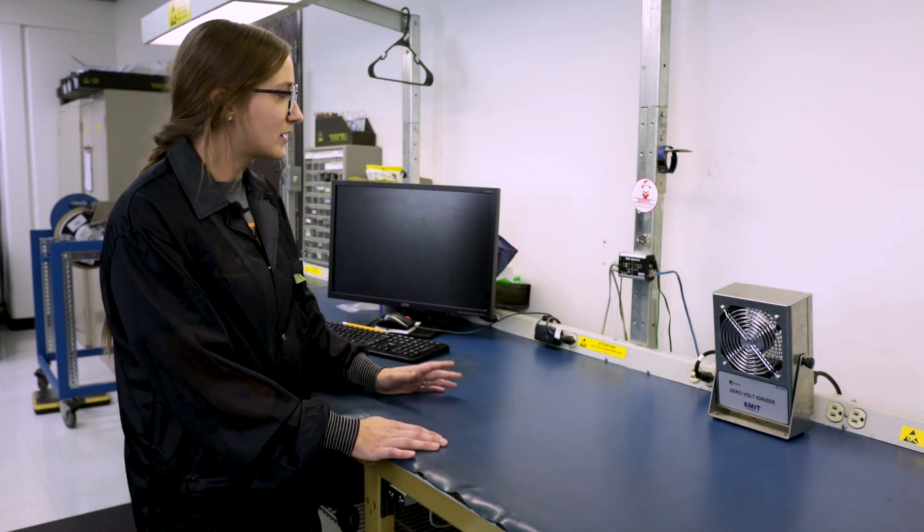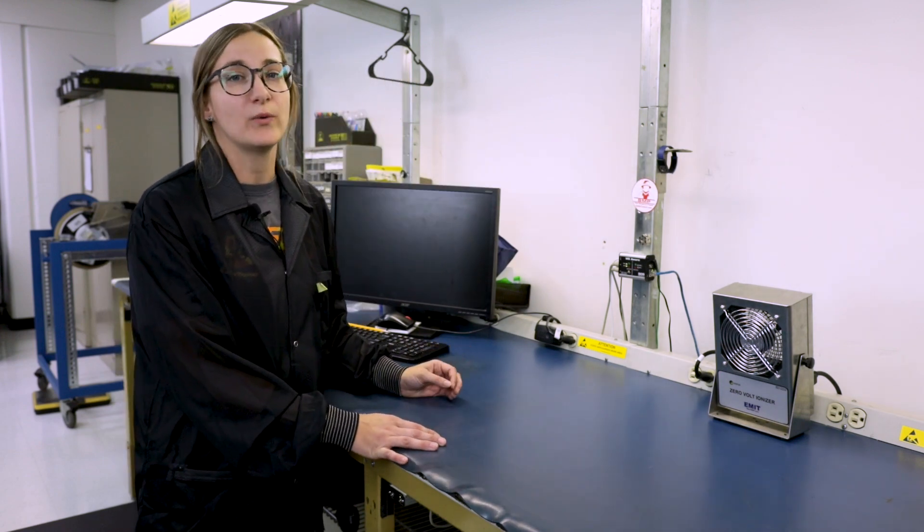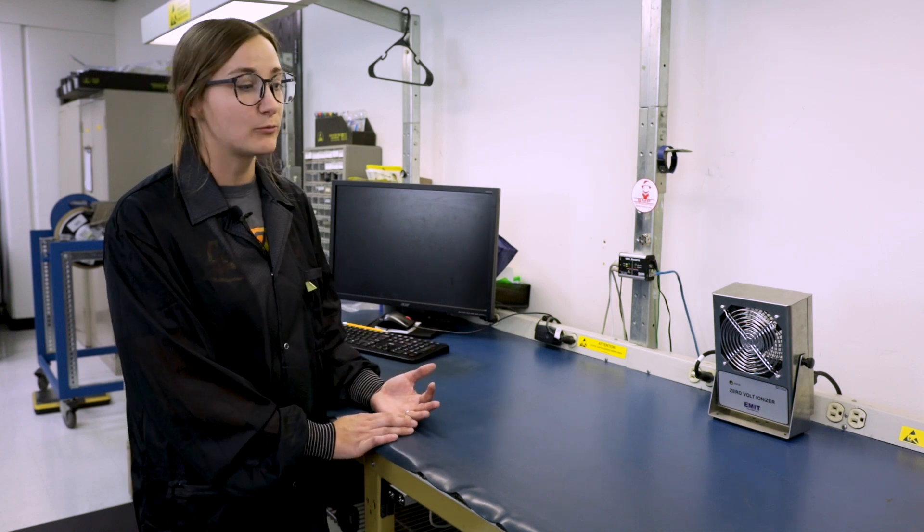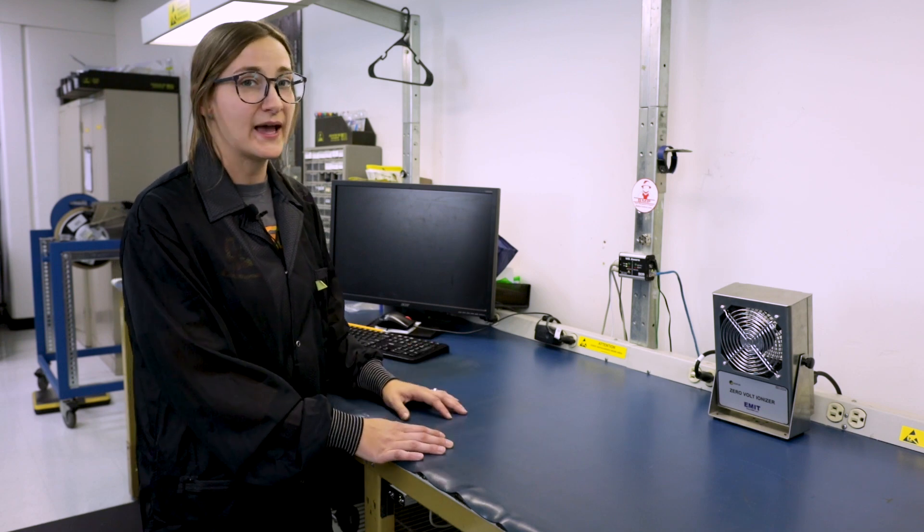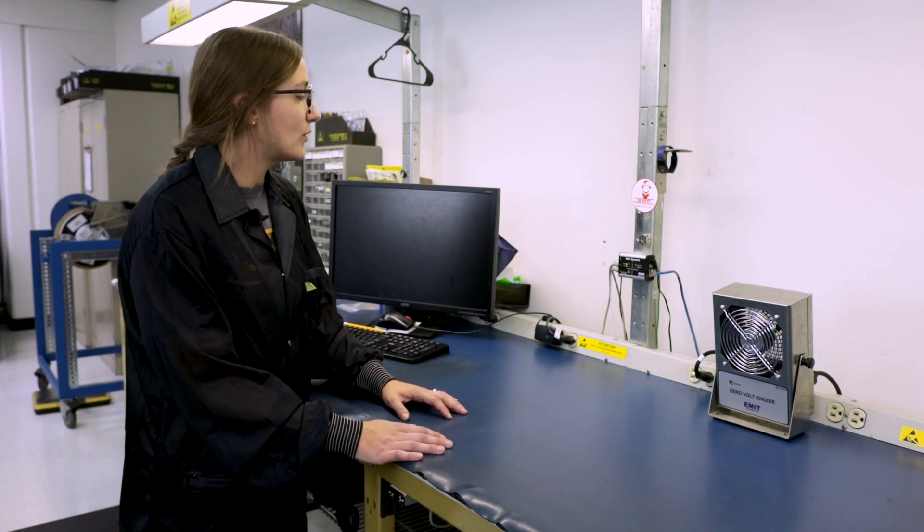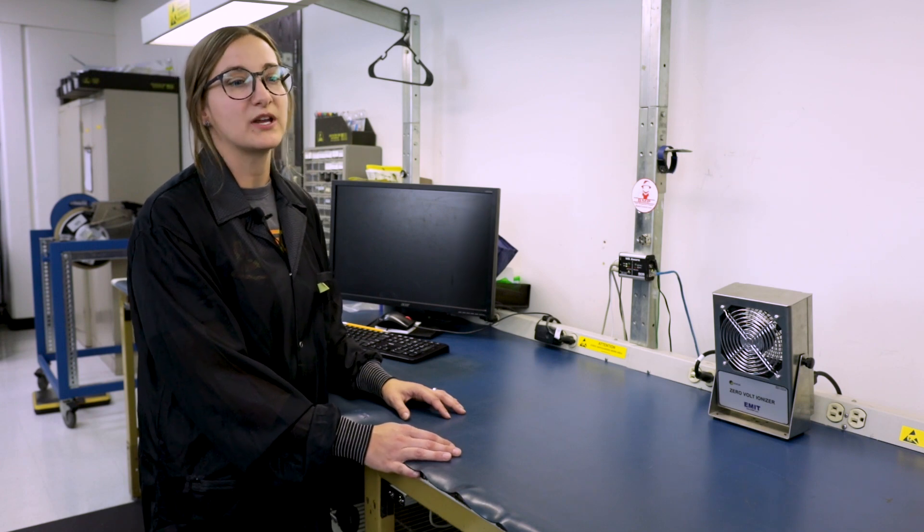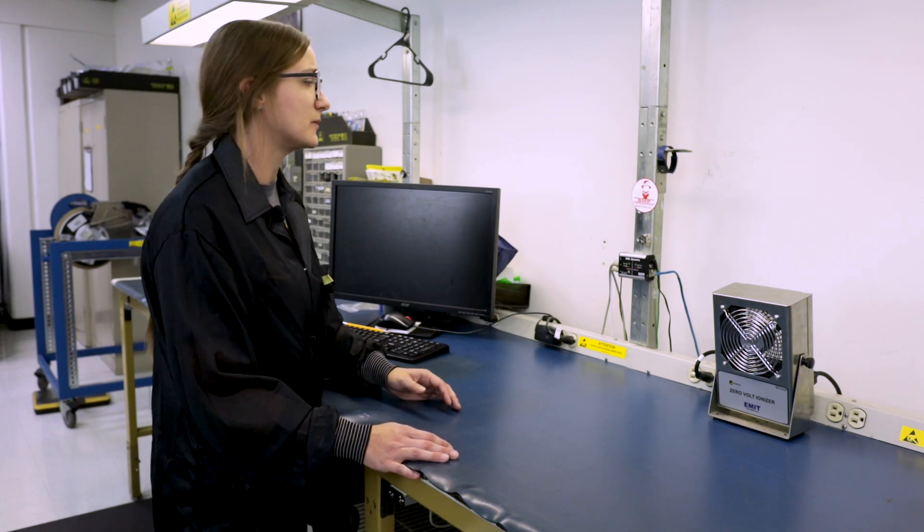So the thing about this is that it lets you know right away when there's a problem. If you lose any kind of ground contact, whether it be the operator or a mat, it lets you know. So it could be something like your ground point contact could be off, and we want to make sure that we troubleshoot any of these problems.